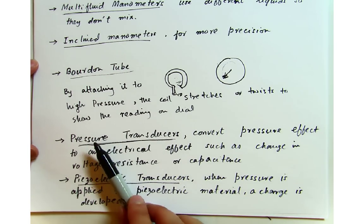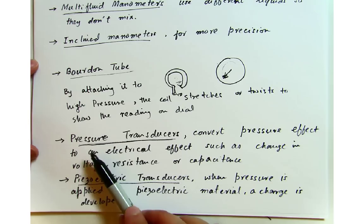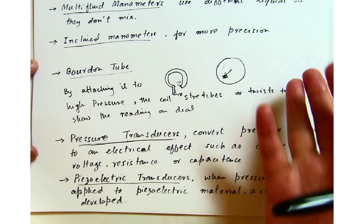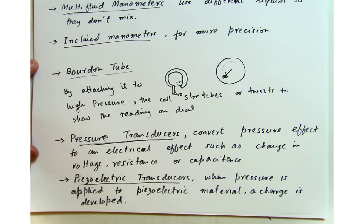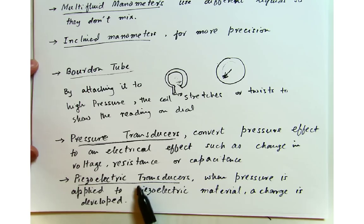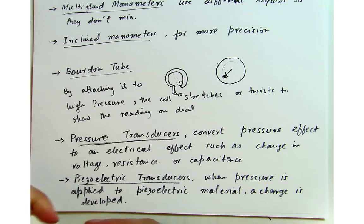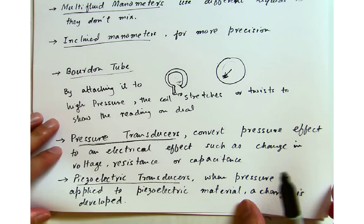Some other devices, which are getting more common these days, are known as pressure transducers. They convert the pressure effect to an electrical effect, such as change in voltage, resistance, or capacitance. Any time you have a change in voltage, resistance, or capacitance, you can simply read it through a voltmeter and it will tell you how much the change was in the pressure. Piezoelectric transducers work when pressure is applied to a piezoelectric material and a charge is developed. Any time something changes in the environment, you can use piezoelectric to measure temperature differences, humidity differences, and so on. The charge can be correlated to changes in the pressure — pretty neat devices.